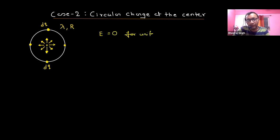So electric field is zero for uniformly distributed charge. All of you understood this? Clear.